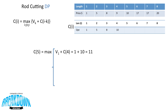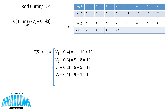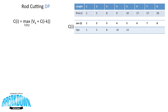For c(5), the range of k goes from 1 to 5. v(1) + c(4) = 1 + 10 = 11. For k = 2: v(2) + c(3) = 5 + 8 = 13. For k = 3: v(3) + c(2) = 8 + 5 = 13. For k = 4: v(4) + c(1) = 9 + 1 = 10. For k = 5 (no cut): v(5) = 10. We have two solutions both equal to 13, so the optimal solution for c(5) has a value of 13.